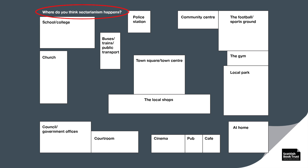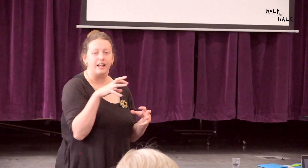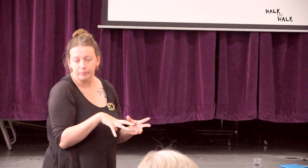At the top of the map there's the question: 'Where do you think sectarianism happens?' The instruction is to mark each place that you think sectarianism happens with a dot or a cross. This is another exercise like the vote with your feet exercise. The beauty of it is it gives you a really useful snapshot of the extent to which your learners are aware of sectarianism, taking it to a new level by showing their awareness within their community.